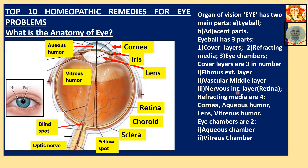Number three is the nervous or most internal layer — the retina. This is the inner layer of the eyeball.